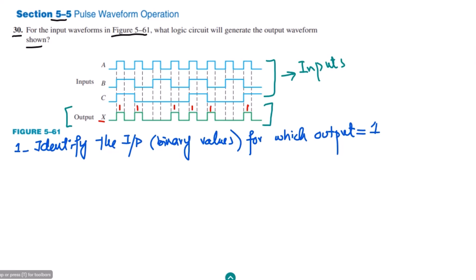For each high output level I need to find the binary values of the inputs. For the first output-high region, the combination is 1, 1, 1. For the second it is 1, 0, 0. For the third it is again 1, 0, 0. For the fourth it is 1, 1, 1. For the fifth it is 1, 0, 0, and for the last one it is 1, 0, 1. These are the combinations for which the output is 1.